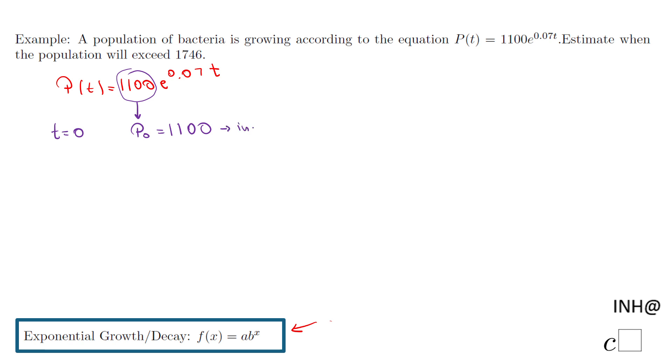What we are asked here is when the population is 1,746. So in fact, what I'm going to do now is place P(t) equal to this value, 1,746, and you notice I have an equation now where I need to find t.